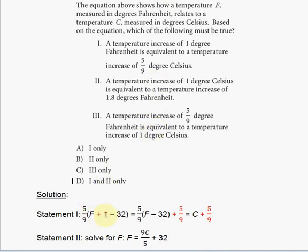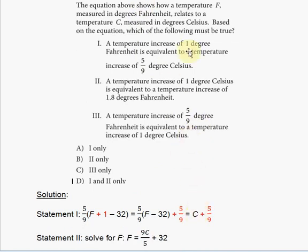We substitute F plus one into the equation: C = (5/9)(F + 1 − 32). Expanding, this gives (5/9)(F − 32) plus five-ninths. We can substitute (5/9)(F − 32) back as C from the original equation. So the new C equals C plus five-ninths — meaning when you increase degrees Fahrenheit by one degree, degrees Celsius increases by five-ninths of a degree, exactly what statement one says.